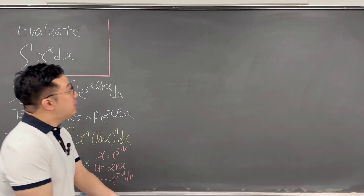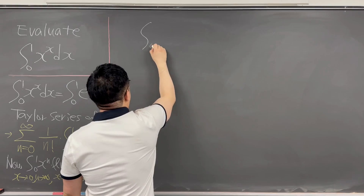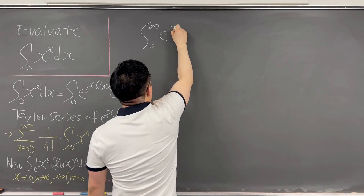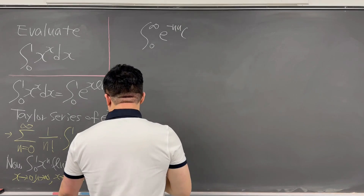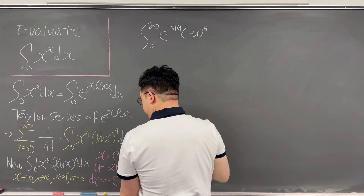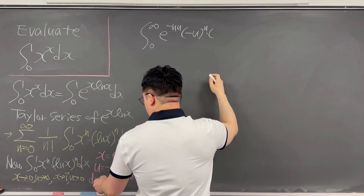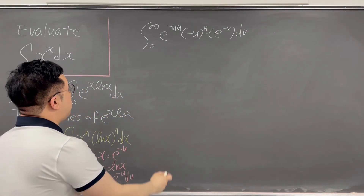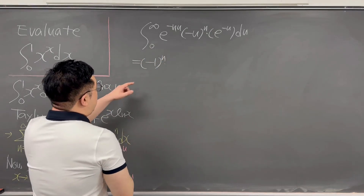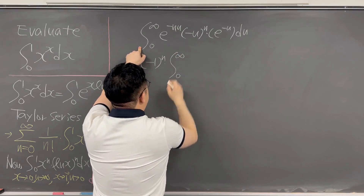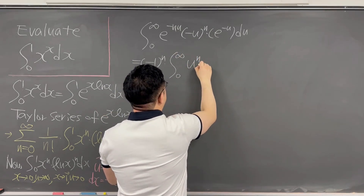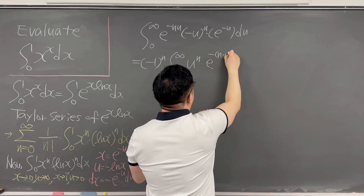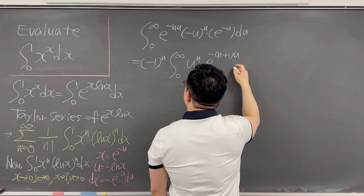Using this substitution, let's rewrite the integral. The bounds go from zero to infinity. Then we have e to the power of negative n times u, times negative u to the power of n, times e to the power of negative u du. Pulling out negative one to the power of n, we get negative one to the power of n, times the integral from zero to infinity of u to the power of n, times e to the power of negative quantity n plus one times u, du.